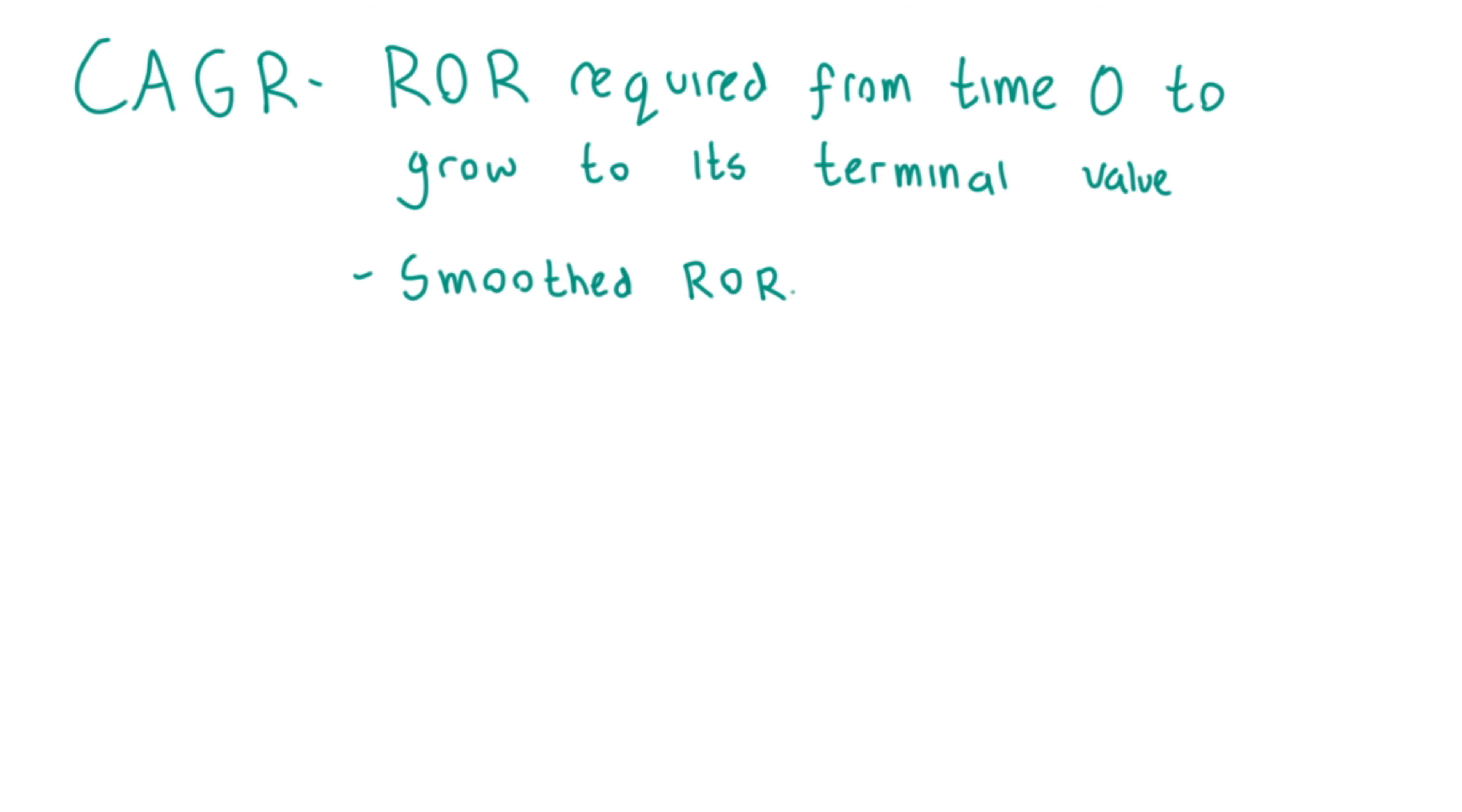We use the compound annual growth rate or CAGR to measure the smooth rate of return for anything that can rise or fall in value over time, such as a stock.